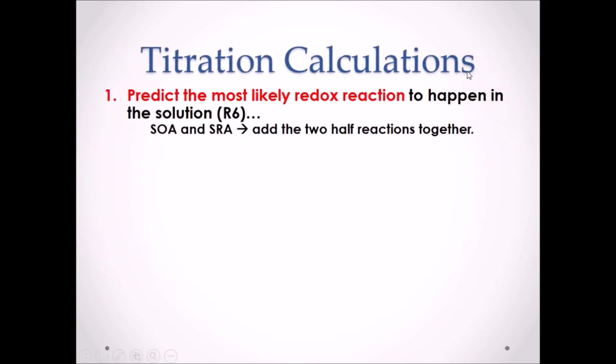Titration calculations. Step number 1. Predict the most likely redox reaction to happen in the solution. This is the knowledge that we learned in Lessons R6, which is find your strongest oxidizing agent and your strongest reducing agent. Add the two half reactions together to get your net redox reaction.